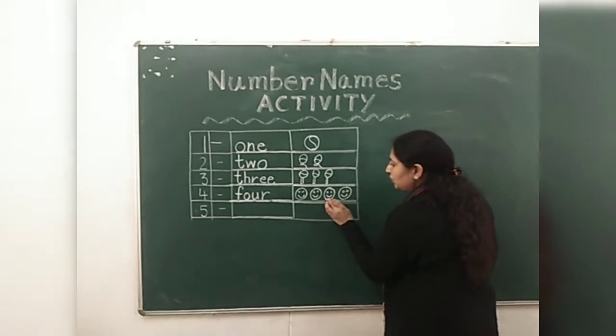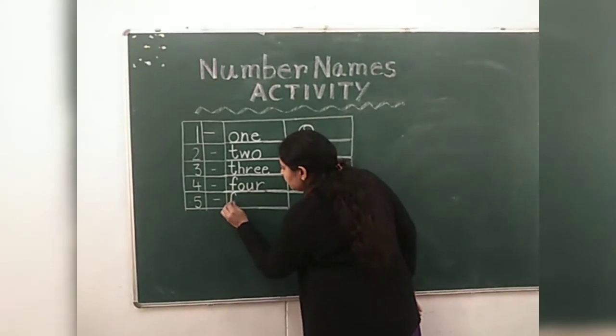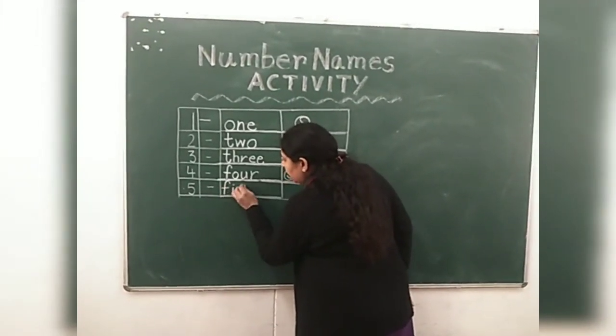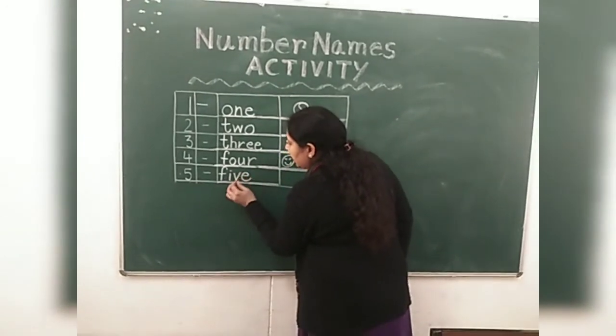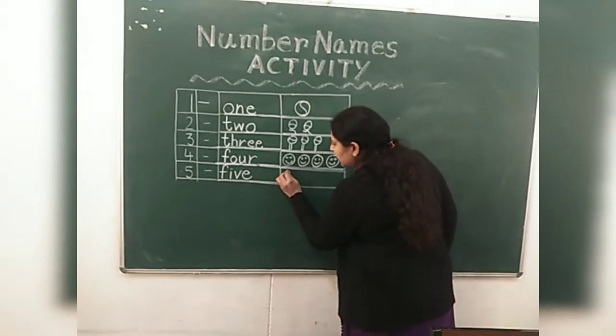One, two, three, four, five. Five. Spelling it: F-I-V-E. Five. We will draw five objects.